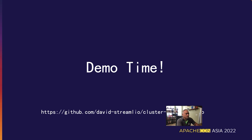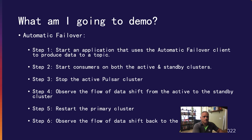Next, I will demonstrate both failover clients in action. The source code for this demo is available in the GitHub repo shown on screen. For the automatic failover demo: first, I'll start an application using the automatic failover client to produce data to a topic. Next, I'll start consumers on both the active and standby clusters so we can see where data is flowing in real time. After some messages start flowing, I will stop the active Pulsar cluster, and we should observe the flow of data shift from the active to the standby cluster automatically without any intervention. Finally, I will restart the primary cluster to demonstrate that data will switch back over, and we should observe the flow return to the primary cluster.